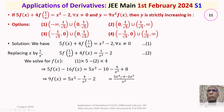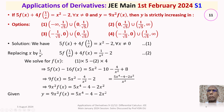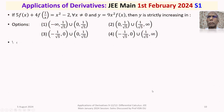Taking the LCM gives 9f(x) = (5x⁴ − 4 − 2x²)/x². Cross-multiplying gives 9x²·f(x) = 5x⁴ − 2x² − 4. Since y = 9x²·f(x), we obtain y = 5x⁴ − 2x² − 4, which is a polynomial of degree 4.